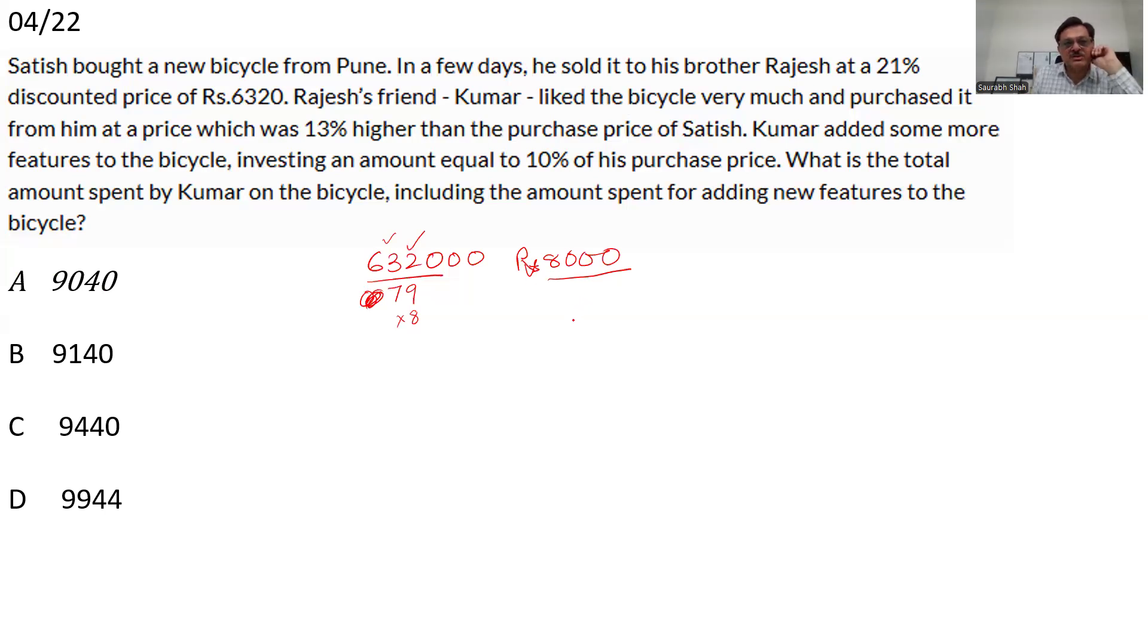He has sold it at a discount of 21% to Rajesh. Now Rajesh's friend Kumar liked the bike and purchased it from him at a price which was 30% higher than the purchase price of Satish. Satish's purchase price is 8000. 13% higher. We can multiply by 1.13 or we can find 13% quickly. 13 upon 100. Mentally we can do it. 13 into 8 is 104. So 1040. This is 13%. So 9040. This is the price at which Kumar purchases it from Rajesh. Now Kumar added some features to the bike, investing an amount equal to 10% of his own purchase price. Luckily we have a 0. So 10% of 9040 is 904.